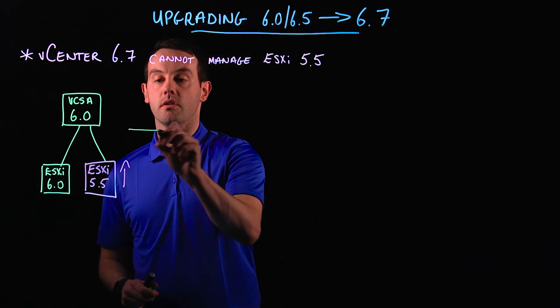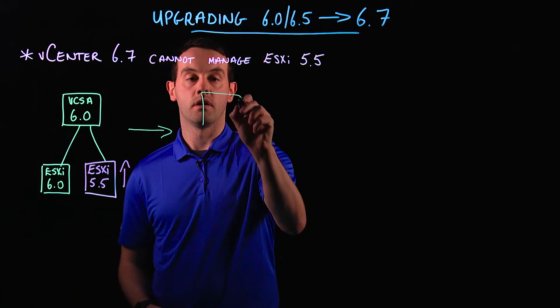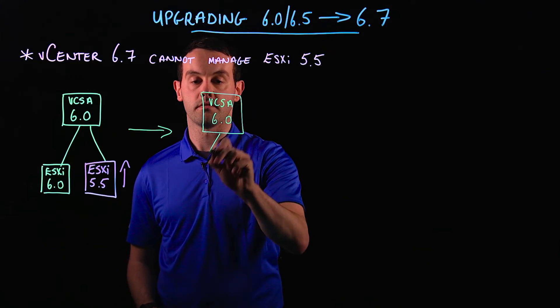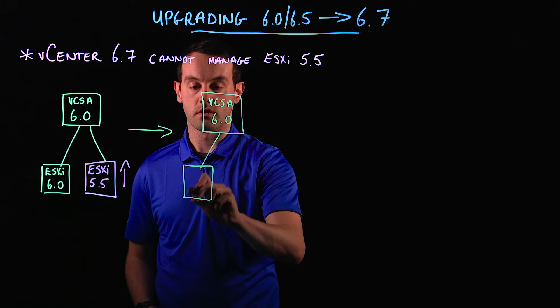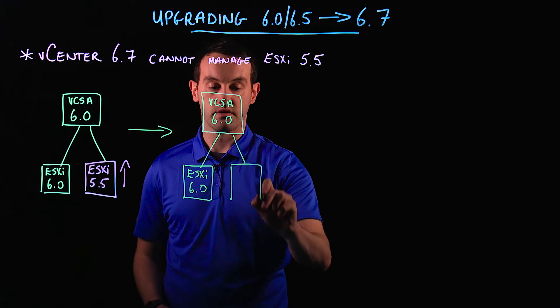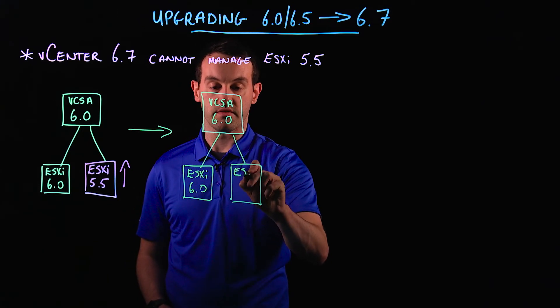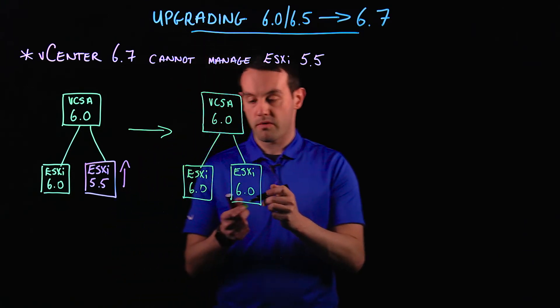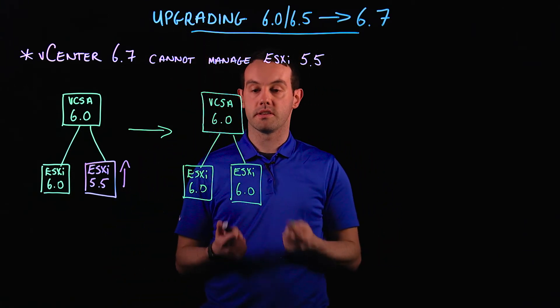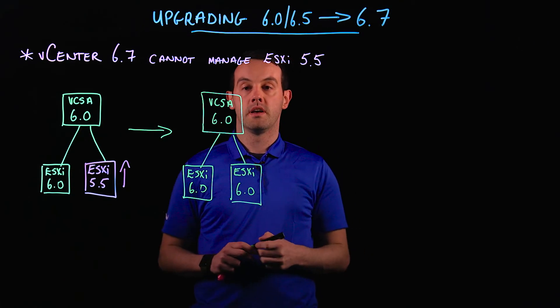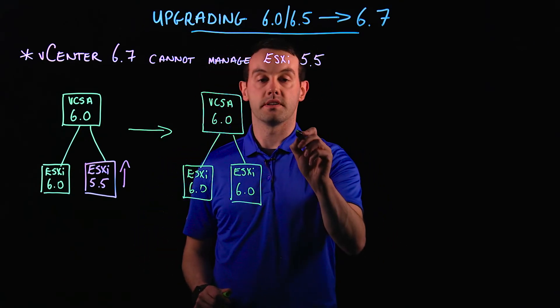Our environment would now look like this. We've upgraded the previous ESXi 5.5 to 6.0, so now we've got everything upgraded to 6.0. We're in a good stage now where we can upgrade the vCenter Server to 6.7.